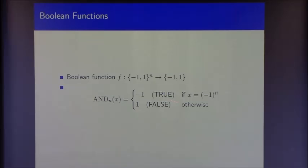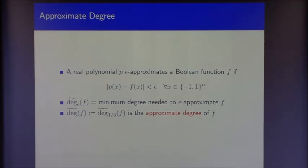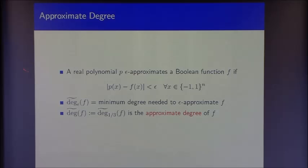This talk will be about a certain measure of the complexity of a Boolean function known as approximate degree. A real polynomial P is said to epsilon-approximate a Boolean function f if |P(x) - f(x)| is bounded in absolute value by epsilon for all points x in the Boolean hypercube. This is a worst-case notion of approximation. The epsilon approximate degree of f is the minimum degree needed to epsilon-approximate f. By convention, if we don't specify epsilon, we take epsilon equal to one-third.